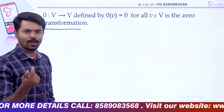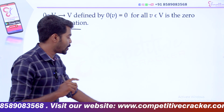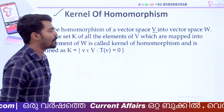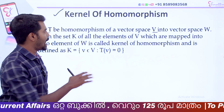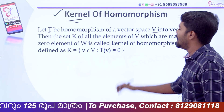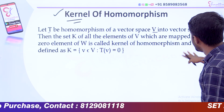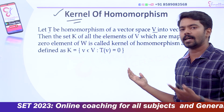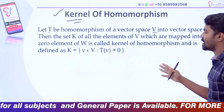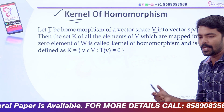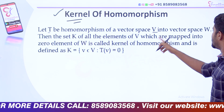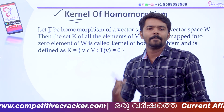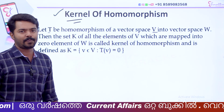Now, a very important exam term — the kernel of homomorphism. Let T be a homomorphism of a vector space V into a vector space W. Then the set K of all elements of V which are mapped into the zero element of W is called the kernel of the homomorphism. It is defined as K equals the set of all v in V such that T of v equals 0.